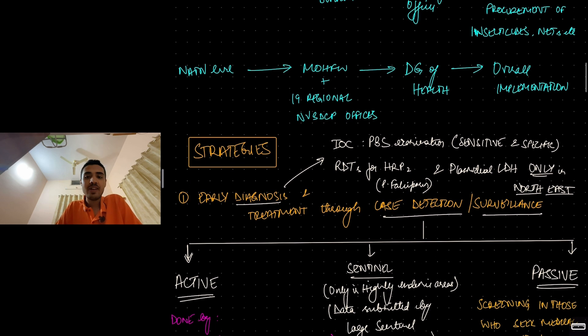And at the national level, you have the Ministry of Health and Family Welfare and the 19 regional National Vector Borne Disease Control Program offices. Who is the head of the program? It is the Director General of Health in the country. What they do? They are basically the planning, organizing unit overall, the top tier. They oversee the overall implementation of the program in the entire country.